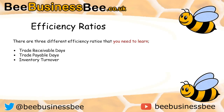We will learn all about the trade receivable days, the trade payable days, and inventory turnover. Simply put, 'receivable' means money you're due to receive — people in your debtors file who have a debt to you. Trade payable days are people we need to pay — creditors. Inventory turnover is straightforward: inventory is another term for stock.